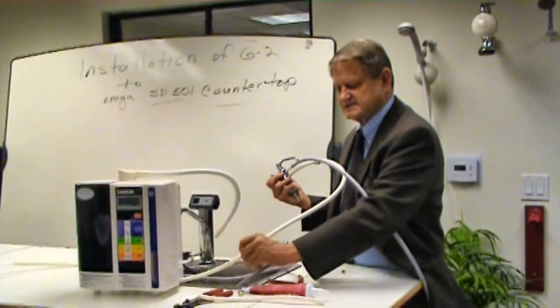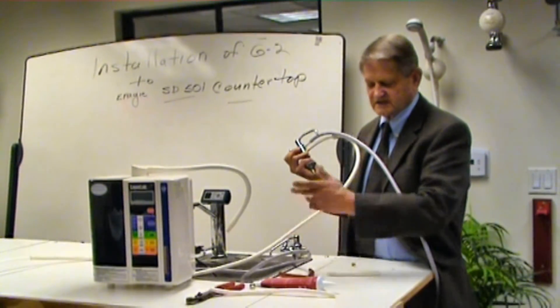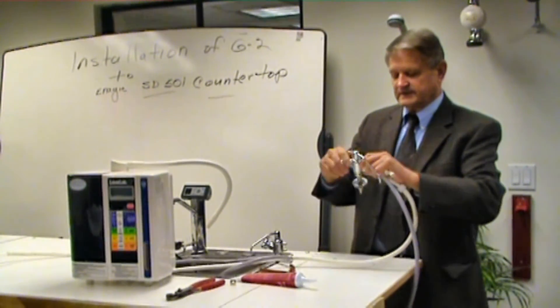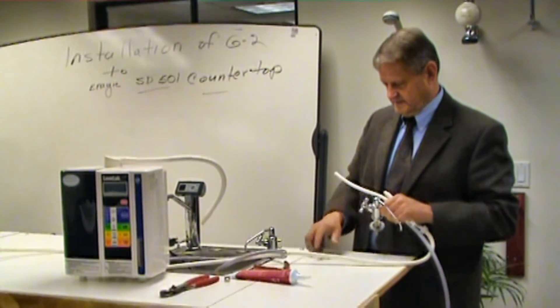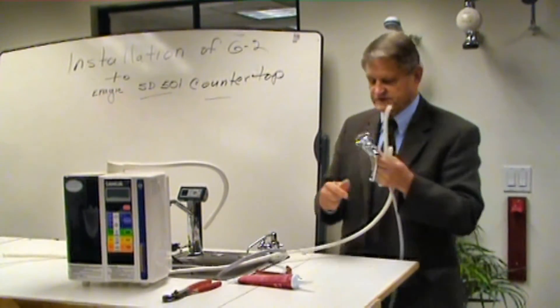I usually will have it about 6 to 8 inches here, and I like to leave the acid hose longer in case I want to fill up buckets or containers, whatever. Anyway, that is how you install the SD501 to the G2 faucet.